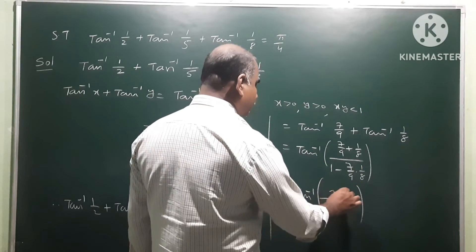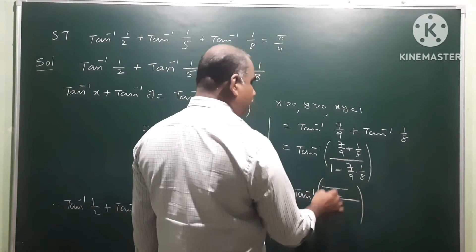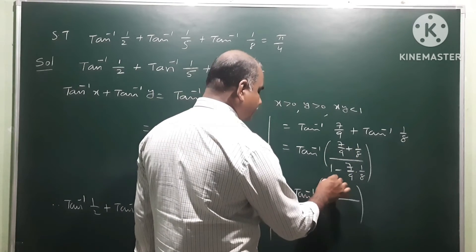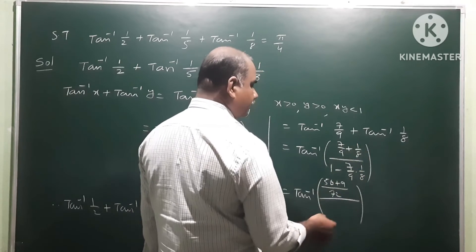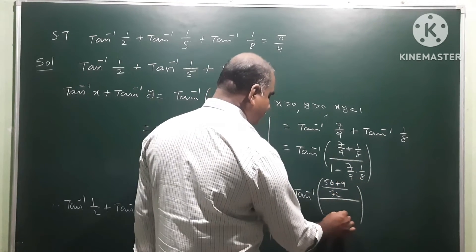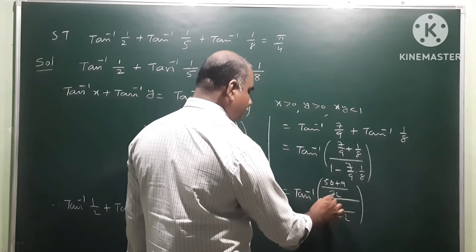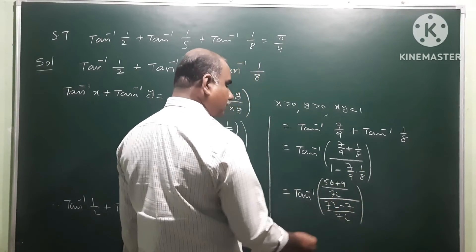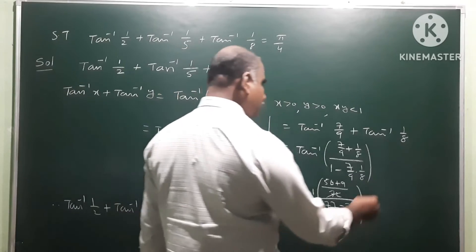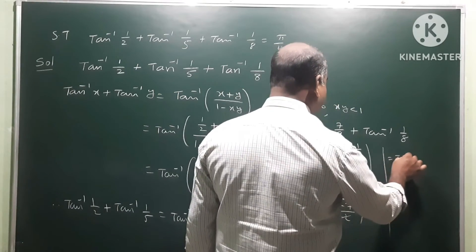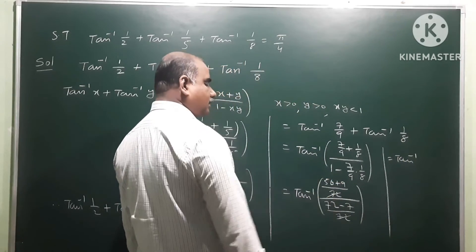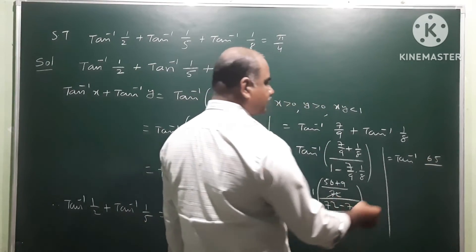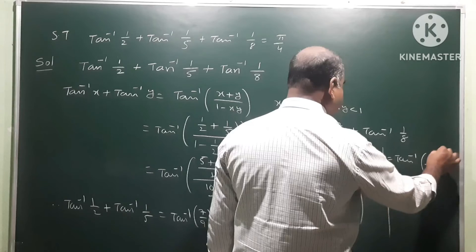Taking LCM as 72: numerator becomes 56 plus 9 which is 65, and denominator becomes 72 minus 7 which is also 65. So the 65s cancel and we get tan inverse of 1.